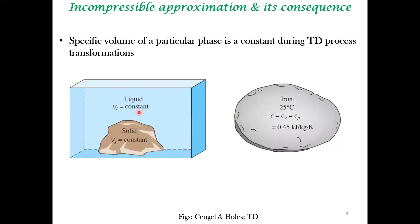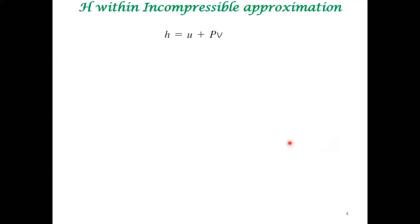The reason for the difference between Cp and Cv is the additional work done due to changes in volume in the case of Cp. If changes in volume are negligible or zero, there is essentially no difference between Cv and Cp. Therefore, for solids and most liquids, we specify a single specific heat capacity. Within the incompressible approximation, certain other simplifications become evident.